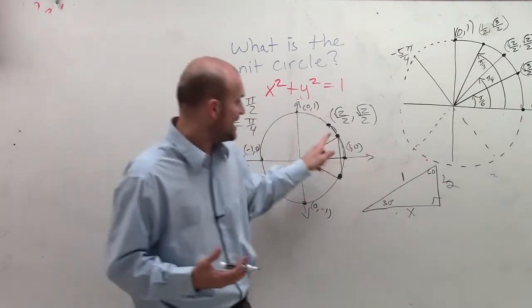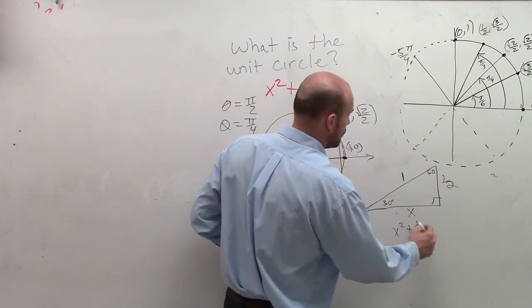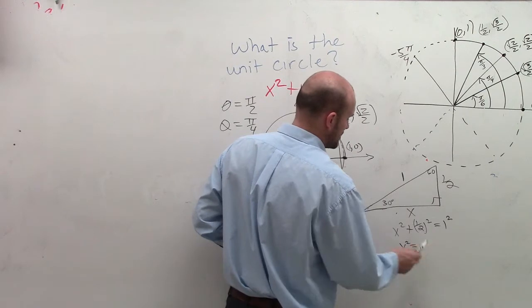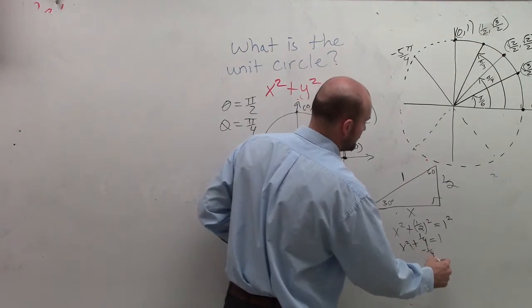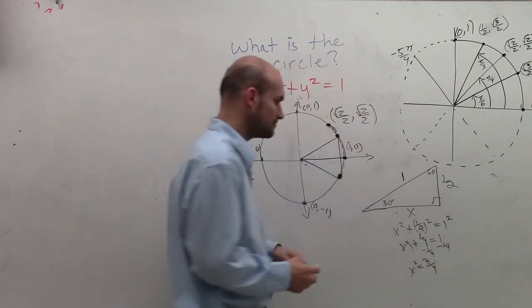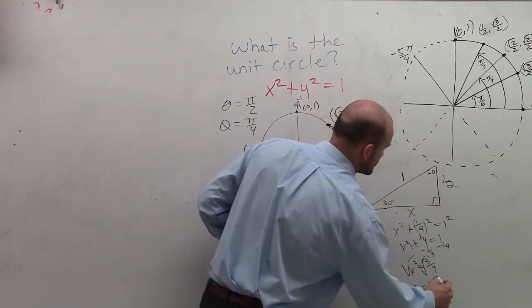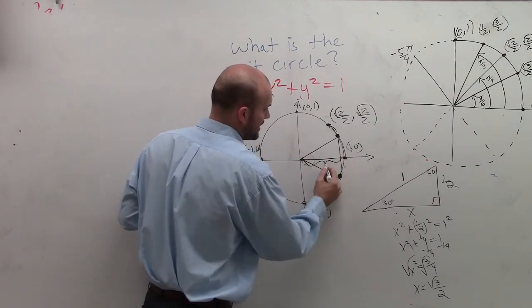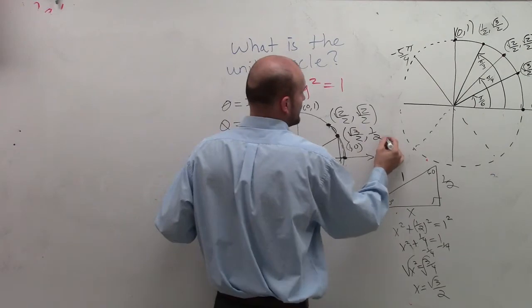This length is our remaining length that we do not know the value of. So again, what I'm going to do to find this missing point is I need to find this x length. So I'll use Pythagorean theorem, say x squared plus 1 half squared equals 1 squared. Now I have x squared plus 1 fourth equals 1. Subtract 1 fourth. And I get x squared equals 3 over 4. Now, I'll take the square root. And what I get is x equals the square root of 3 over 2. So what that means is this x value here is the square root of 3 over 2, comma, the height of this point is 1 half.